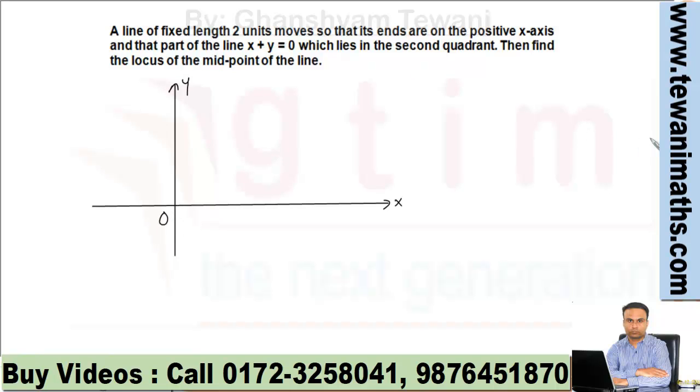Here there is a line x + y = 0, which is this one. This part of the line is lying in the second quadrant.